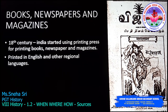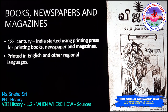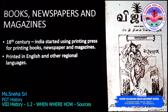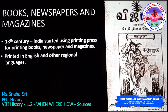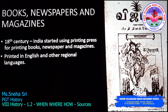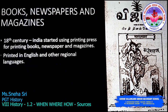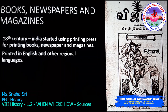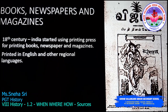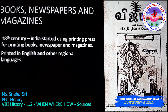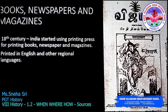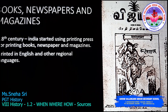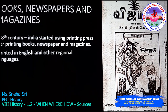The books, newspapers, and magazines — around the 18th century, India started using the printing press for printing books, newspapers, and magazines. People spread their information and created awareness among fellow Indians through these mediums, printed in regional languages as well as English. On the picture you will be able to see the cover page of the daily journal Vijaya, edited and published by Subramanya Bharathiyar. It was first published in Madras and then from Pondicherry.